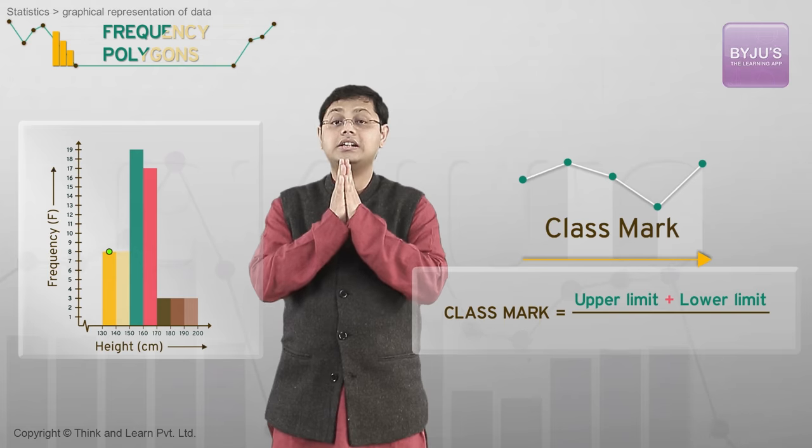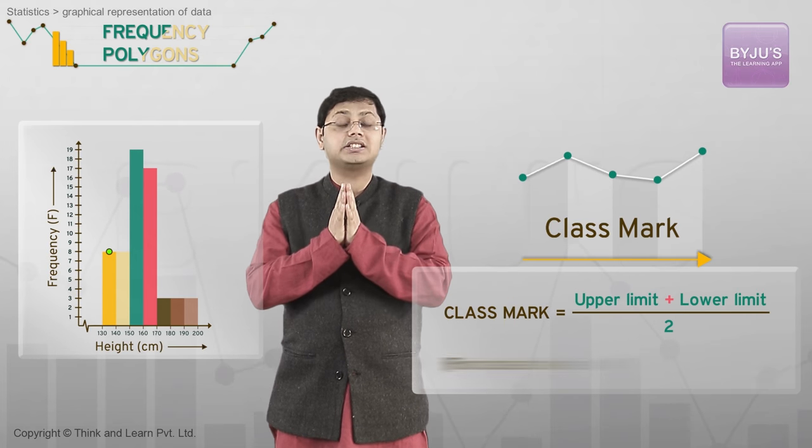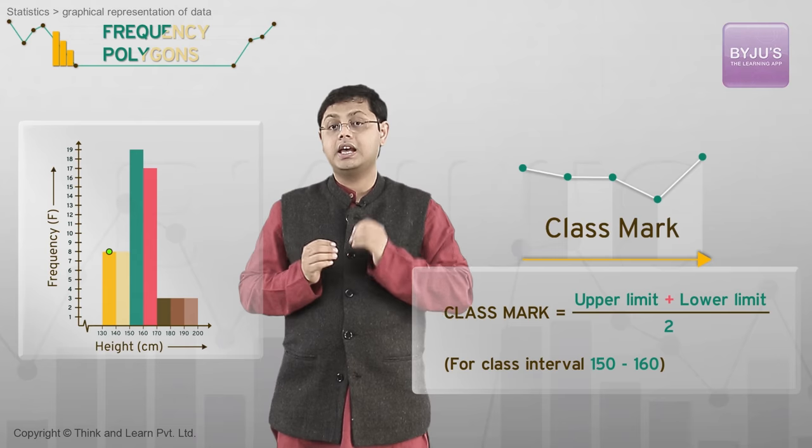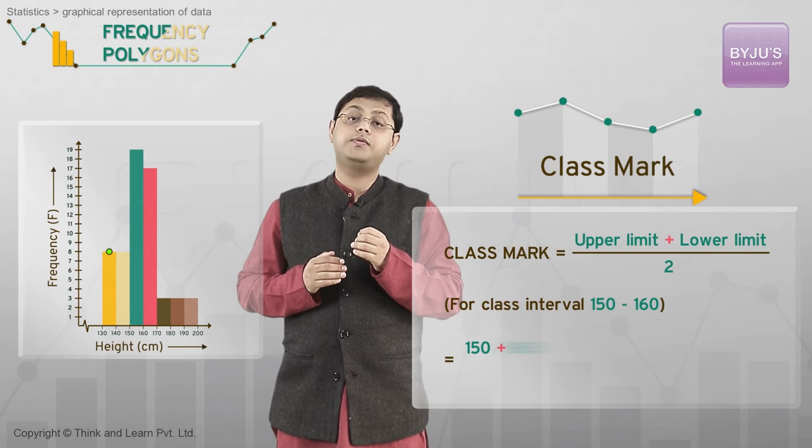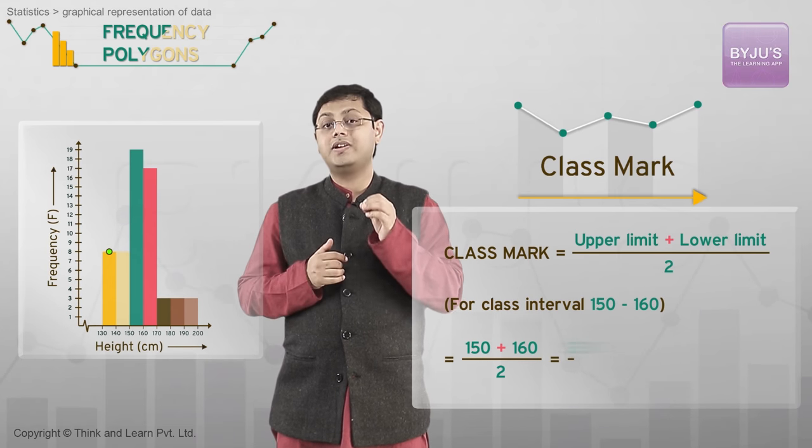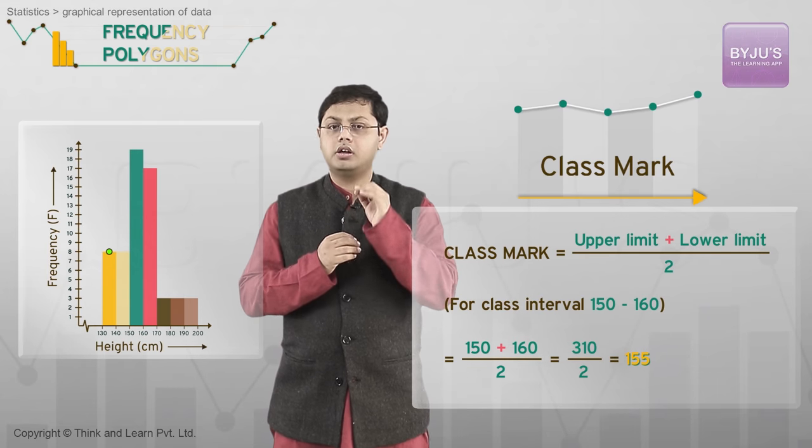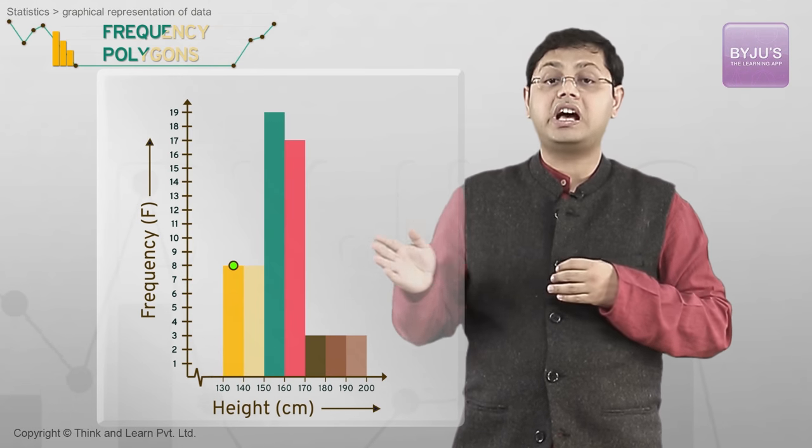If we consider the class interval of 150 to 160, its class mark is 150 plus 160 by 2, which is going to be 155. Next, I will highlight the class marks for all other class intervals as well.